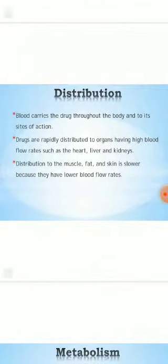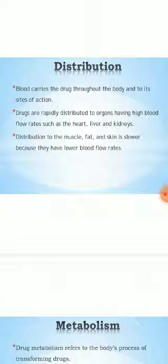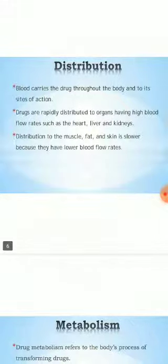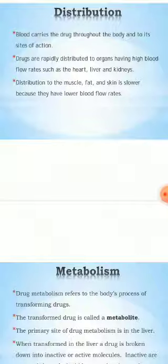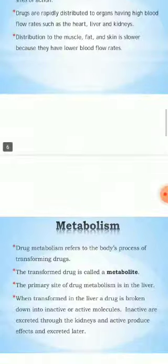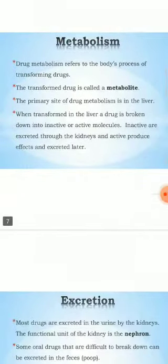Now let's talk about distribution. The main factor is that blood carries the drug throughout the body and to its site of action. Drugs are rapidly distributed to organs having high blood flow rates, such as the heart, liver, and kidneys. Distribution to the muscle, fat, and skin is slower because they have lower blood flow rates.